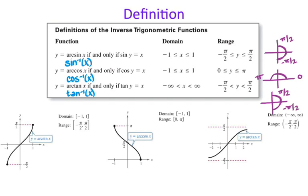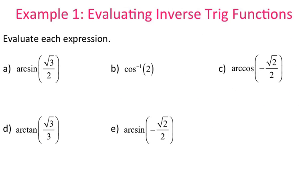We're going to take that into consideration as we start solving problems. So I'm looking for arc sine of root 3 over 2. Whenever you're solving for an inverse, you're looking for the angle measurement — I'm trying to find what angle, when I take sine of it, gives me root 3 over 2. Root 3 over 2 is positive, so that puts me in the first quadrant. Using the hand trick, my Y coordinate is root 3 over 2 when my angle measurement is pi over 3. So arc sine of root 3 over 2 equals pi over 3.